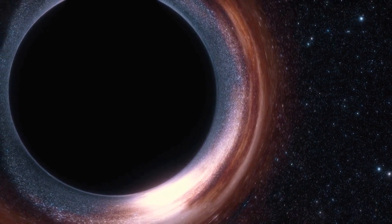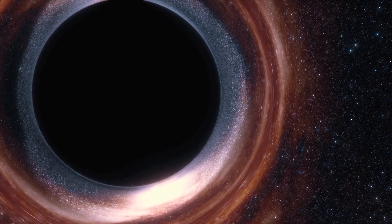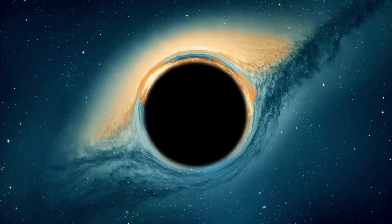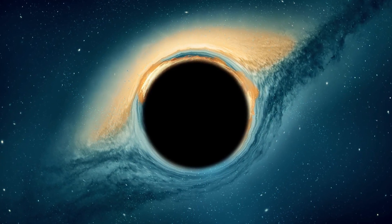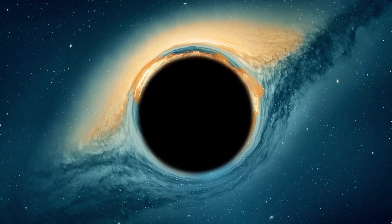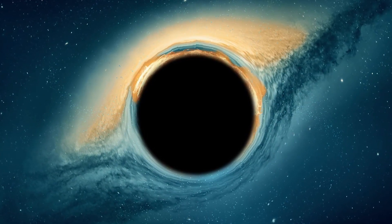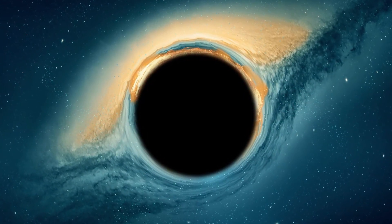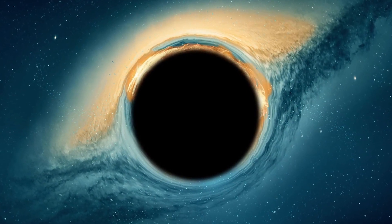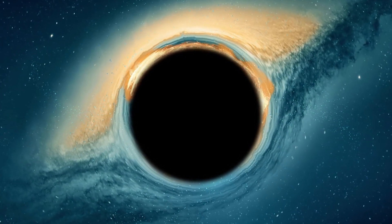As we well know, black holes possess extremely powerful gravitational force that even light cannot escape. However, in the vicinity of a black hole, one often finds a spinning disk of material, such as gas or dust, concentrated by its immense gravity. This material heats up as it spirals towards the black hole, emitting X-rays and other types of radiation, creating a luminous ring known as a corona.